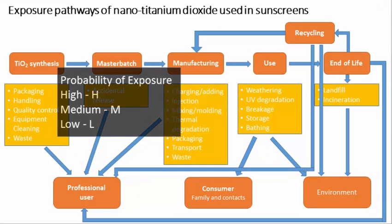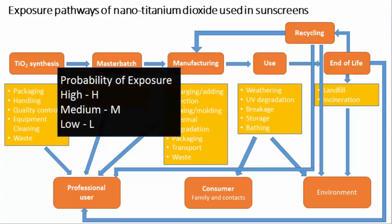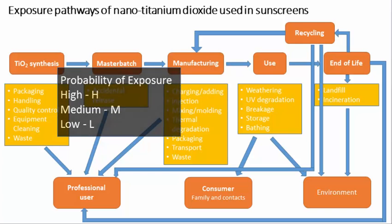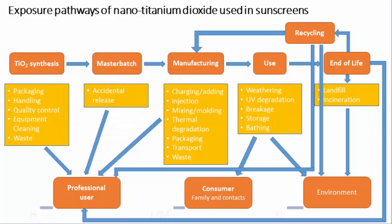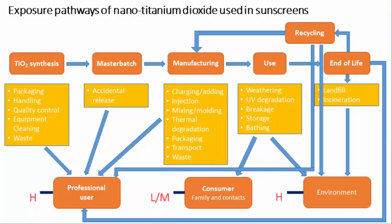Indicate potential exposure pathways that are more probable than others by rating pathways as high, medium, or low. Here, occupational and environmental exposures are rated high, while consumer exposure is rated low to medium.